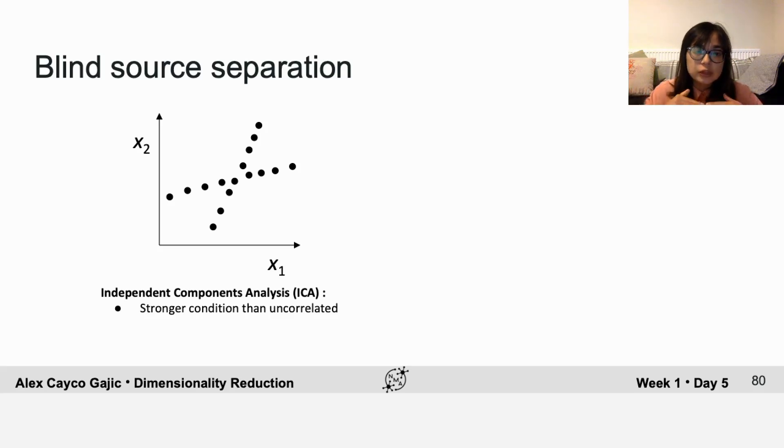In this example, there's clearly two different signals that are responsible for the data points that you see. But PCA will not be able to find those two signals and you need to use ICA in order to recover them. Notice that the basis vectors are not necessarily orthogonal.